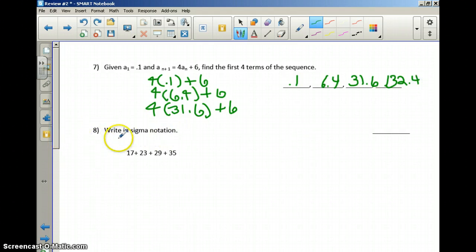Next, sigma notation. Now before I can write this in sigma notation, I have to first see, is there a pattern involved? Well, if I look at 17 to 23, I can see that I am increasing by 6. Now 23 to 29 is also an increase of 6. 29 to 35, same increase, which means my common difference is 6. And that makes this an arithmetic sequence.